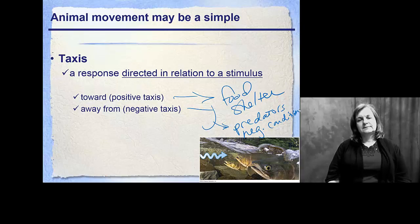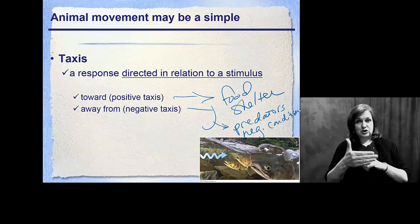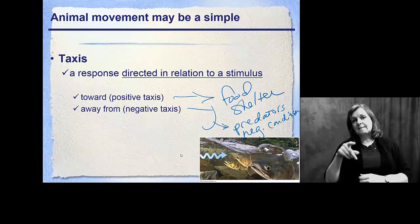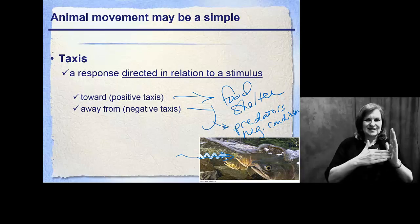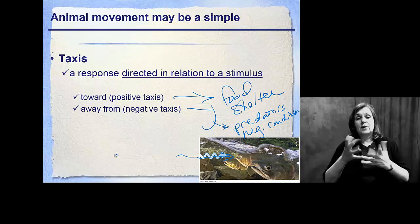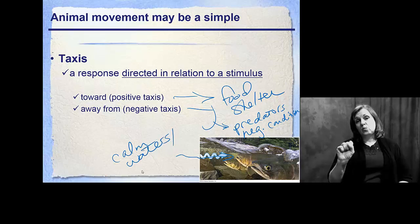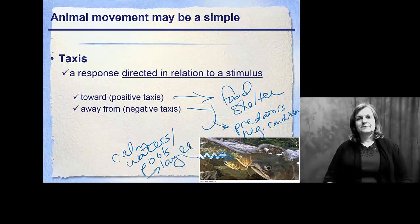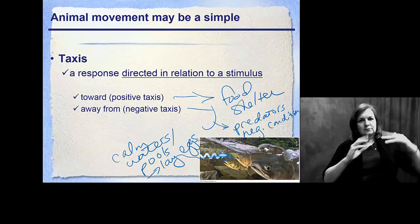When we look at different taxis movements, consider the trout in the bottom corner here. We're looking at them moving upstream. The current is moving in the direction of the arrow, so they're swimming against the current. Their goal by moving upstream is to get to the calm waters and pools at the top of the stream to breed and lay eggs. They know that by swimming against the current, they will find those places.